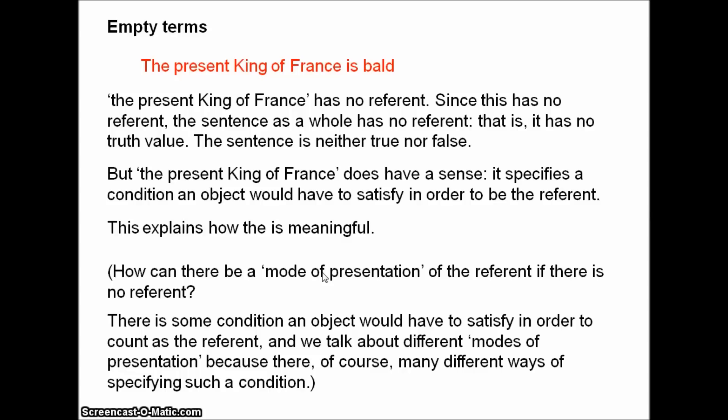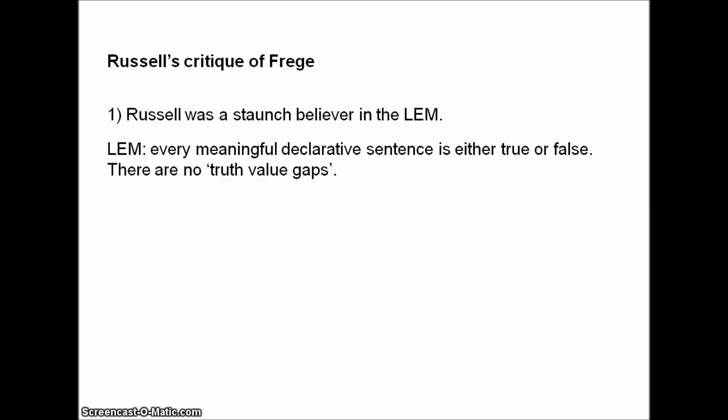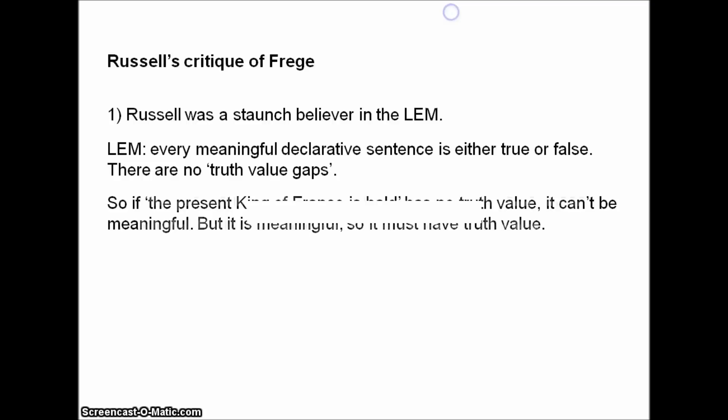In the first video we suggested this proposition might be interpreted as a truth value gap, and we also saw that this solution would be unacceptable to Russell. Russell had two basic objections to Frege. Firstly, he was a staunch believer in the law of excluded middle, which states that for any meaningful declarative sentence, either the sentence is true or the sentence is false — there are no truth value gaps. So for Russell, if 'the present king of France is bald' has no truth value, then it can't be meaningful. But clearly it is meaningful, so it must have a truth value. Frege's solution can't be right.